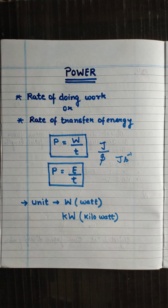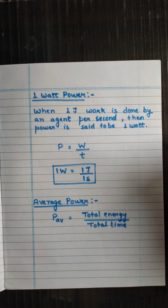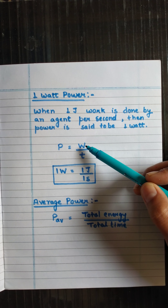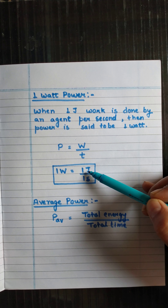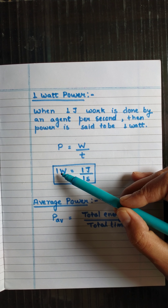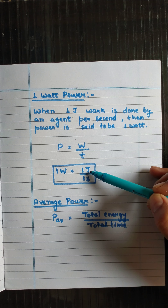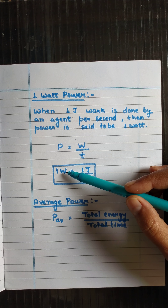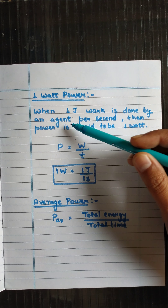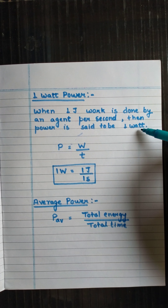Let's define one watt of power. Since power equals work done upon time, if the value of work done is one joule and time is one second, then the value of power will be one watt. So the rate of doing one joule of work per second is called one watt. When one joule of work is done by any agent, organism, or machine per second, the power of that agent is said to be one watt.